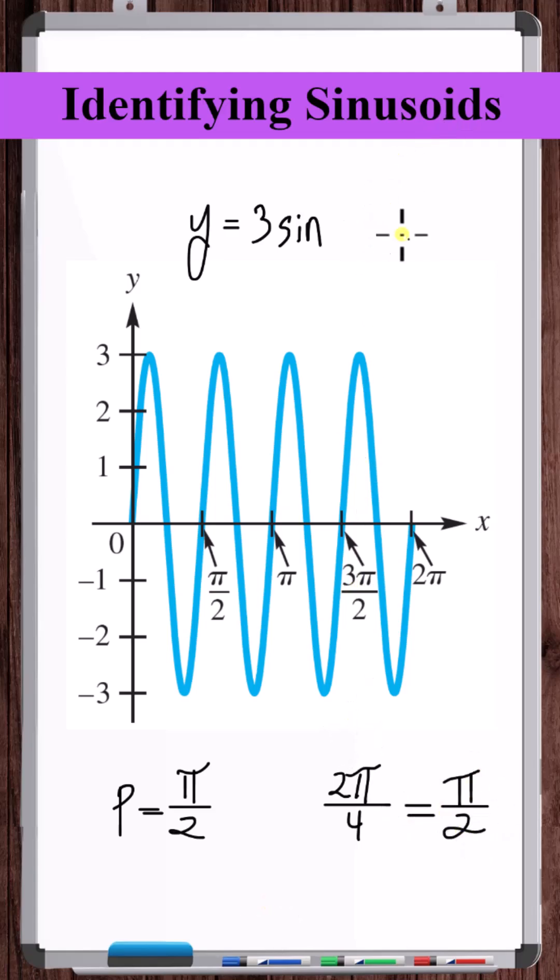So to scale the sine function down along the x-axis by a factor of 4, we multiply the x variable by 4. Now there's been no vertical shifting, so this is the equation of the sinusoid.